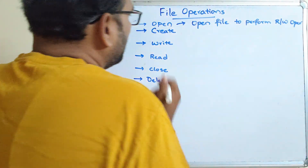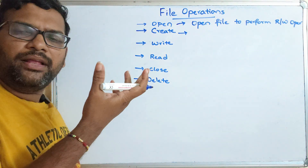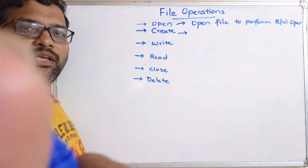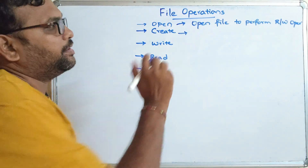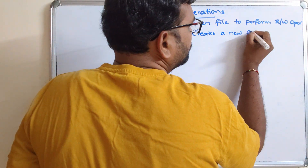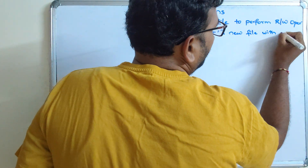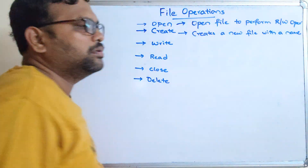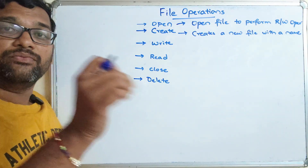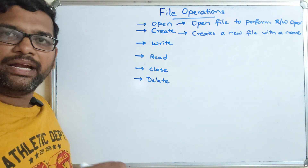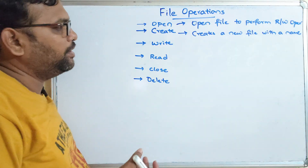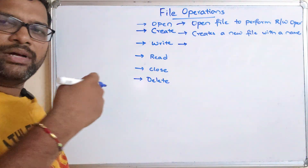Next is create. In order to open a file, the file must first be created. During creation we give the file a name. The operating system assigns one unique number to access the file, and the file is created in one location in secondary storage.